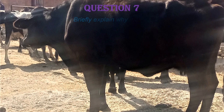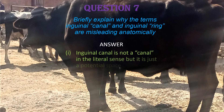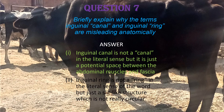Question seven: briefly explain why the terms 'inguinal canal' and 'inguinal ring' are misleading anatomically. For the inguinal canal, it is not a canal in the literal sense but just a potential space between the abdominal muscles and their fascia. For the inguinal ring, it is not a ring in the literal sense but a slit-like structure that is not truly circular.